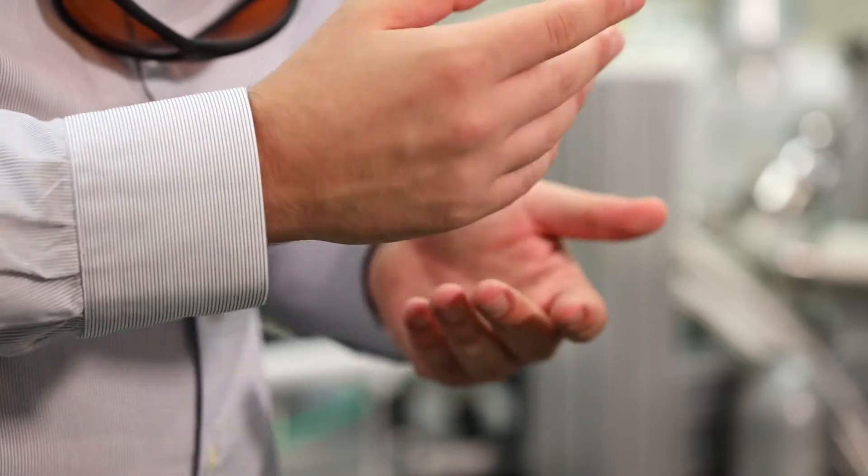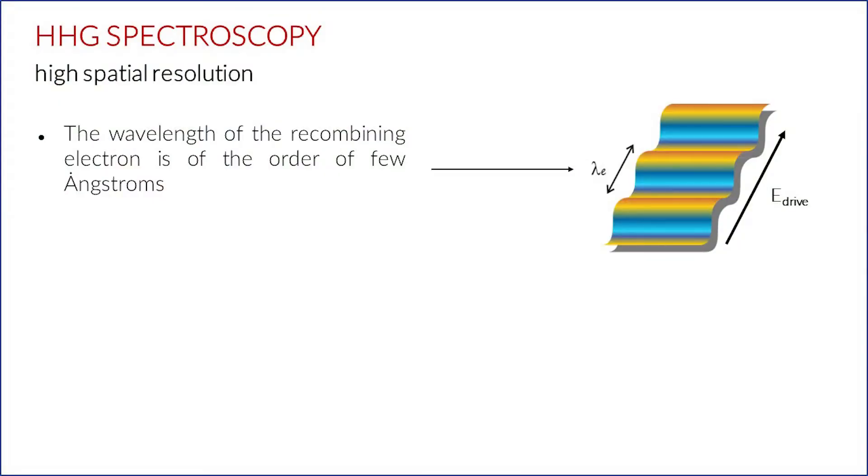But the power of HHG is not only limited to the high temporal resolution. With HHG spectroscopy, we can also reach very high spatial resolutions. As a matter of fact, the wavelength of the recombining electron is usually of the order of few Angstroms, which is the typical size of atomic orbitals.